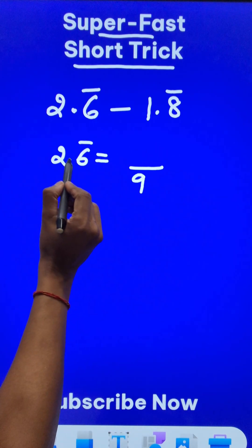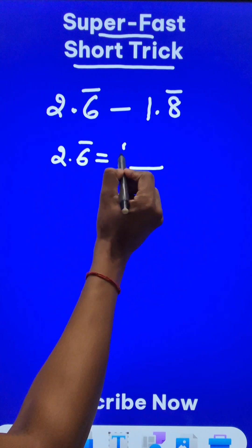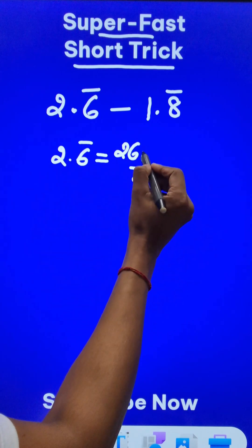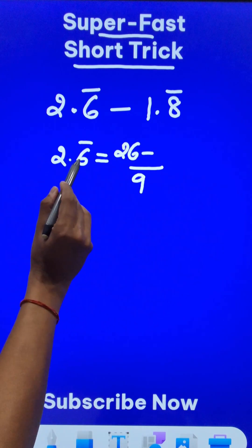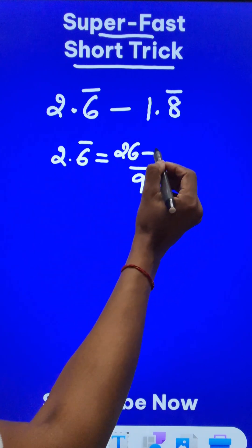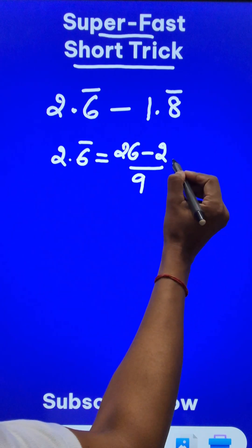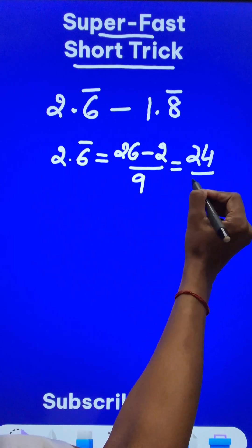And then irrespective of the decimal and the bar, the number is 26, right? And so from 26, we are going to subtract whatever does not contain bar. So the 2 does not contain bar. So I will just subtract a 2 from this. And what do we get? We get 24 upon 9.